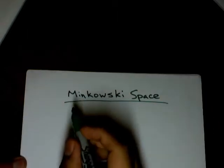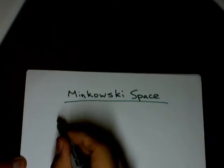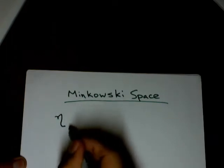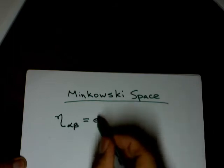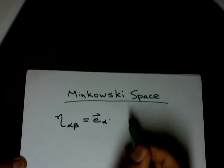And if you remember, this is how you get the components for the metric. For flat space it's usually you use eta, and you dot the basis vectors into each other.